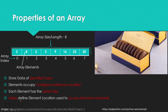The index is used to define the location of elements and also to access them randomly. For example, if we want to access number 5 here, we simply access index number 3; if we want to access 16, we access index number 5. We can access any element stored in an array using the index of that element.